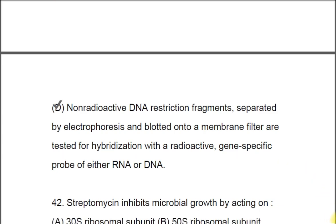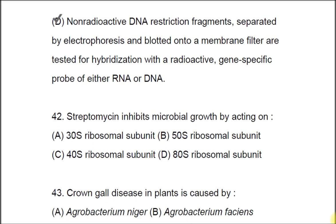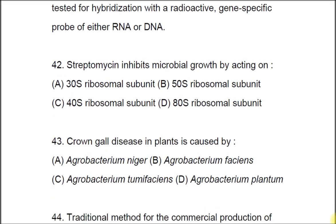Question 42: Streptomycin inhibits microbial growth by acting on A) 30S ribosomal subunit, B) 50S ribosomal subunit, C) 40S ribosomal subunit, D) 80S ribosomal subunit. The correct option is A, 30S ribosomal subunit. It actually binds with the 16S component of the 30S ribosomal subunit.